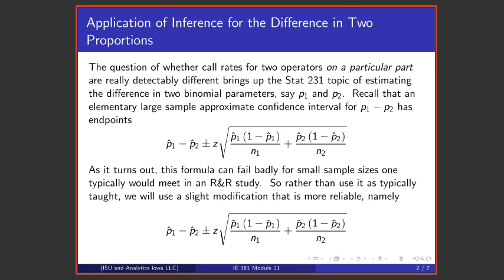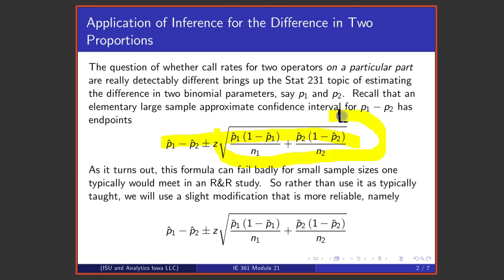To begin with, there is a standard formula from basic statistics that says that if I'm trying to estimate a difference in two proportions p1 and p2, I might take two samples — a sample from each of the two populations — take the difference in the sample proportions, and hedge that by a factor z times a square root. That formula appears in many statistics texts.